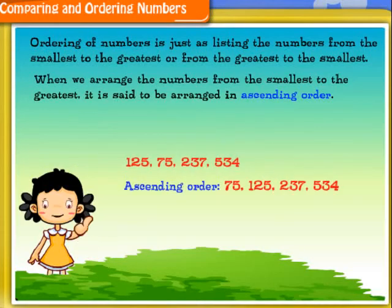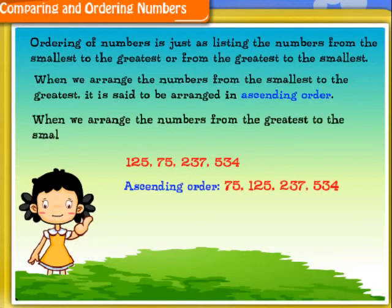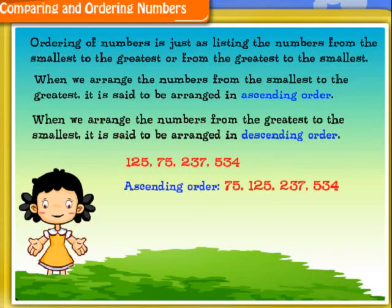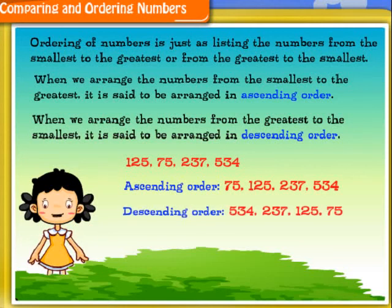Now, if I arrange the numbers from the greatest to the smallest, it is said to be arranged in descending order. So, the given numbers can be arranged in descending order like this.